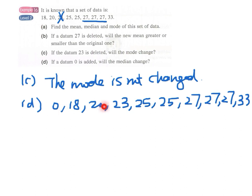And now we have 1, 2, 3, 4, 5, 6, 7, 8, 9, 10—a total of 10 numbers. So the number at the middle will be between the fifth and the sixth number, which is 25. And therefore, it happens in this case the median is not changed, because the original median is also 25.